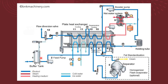Looking at the diagram, the blue lines represent the product — milk — showing how it flows through the plate heat exchanger. You can see regenerative cooling, the hot water system, and the feed pump. The pasteurized milk goes toward the homogenizer where cream is also separated, then passes to the holding tube where it gets pasteurized again, and heat is exchanged with water through regenerative cooling.